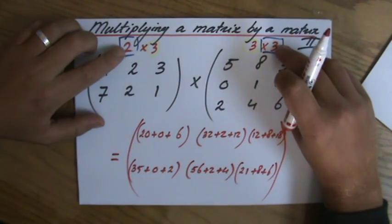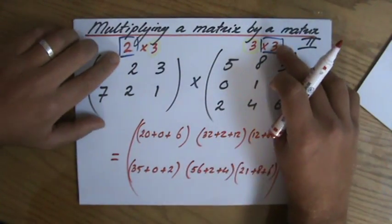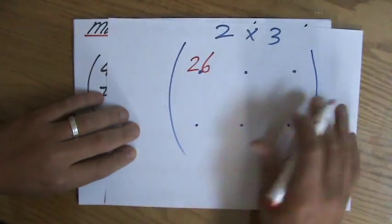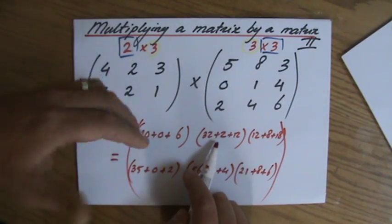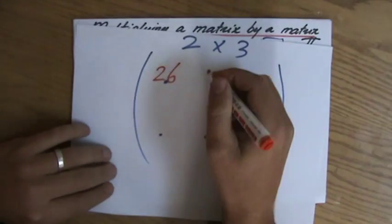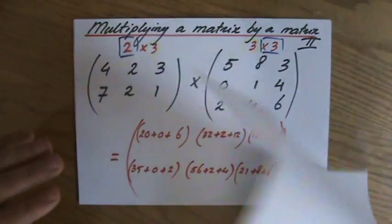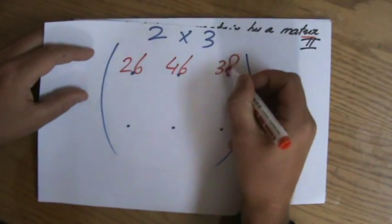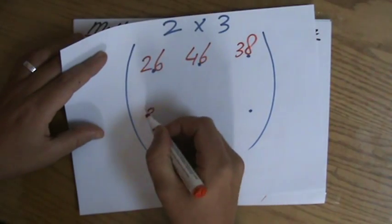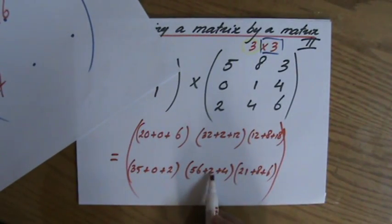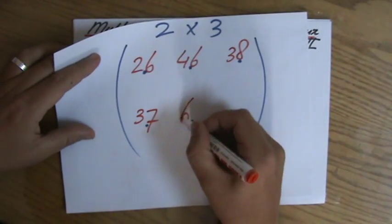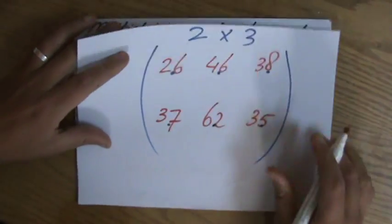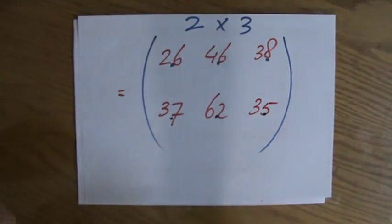So what is 20 plus 0 plus 6? That is 26. I'm going to put a 26 there. 32 plus 2, 34, plus 12, 36. So that is going to be 46 over there. And now you just finish it at 20, 30, 38. And here we have 37. And 56, 58, plus 4, is 62. And finally, 29 plus 6 is 35. So that is my answer, my solution.